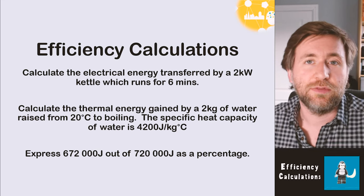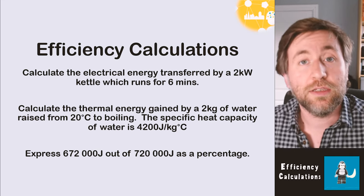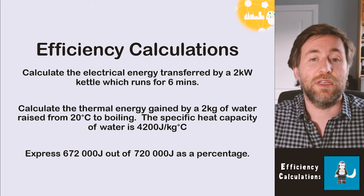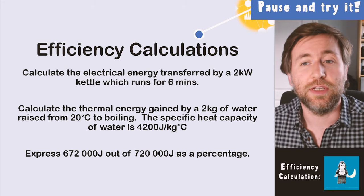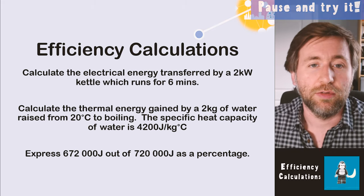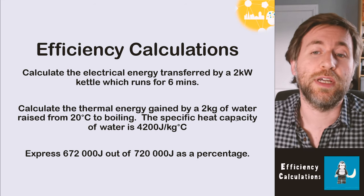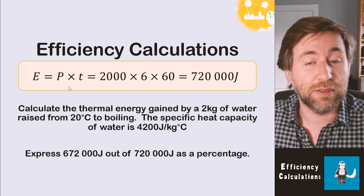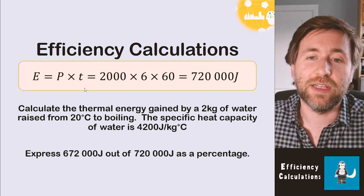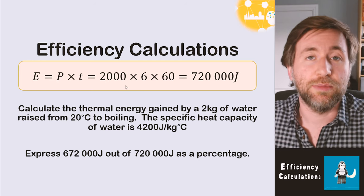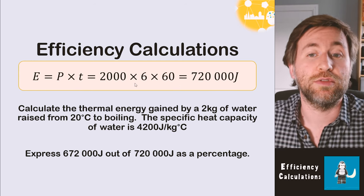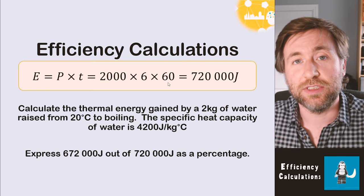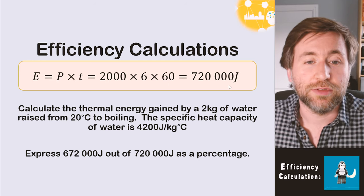Have a little crack at these questions first because I think you'll manage them based on what we've already covered in energy topics — the use of equations to calculate the size of energy stores. Calculate the electrical energy transferred by a two kilowatt kettle which runs for six minutes. Energy is power times time, but you must convert into watts and seconds. So 2,000 watts times 360 seconds gives you 720,000 joules.